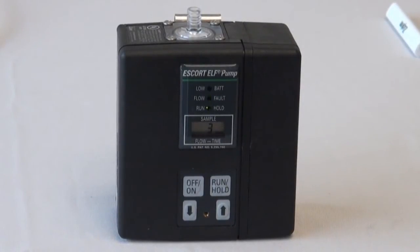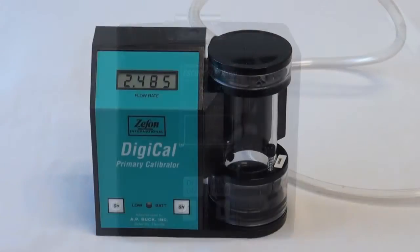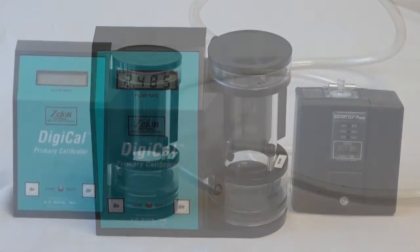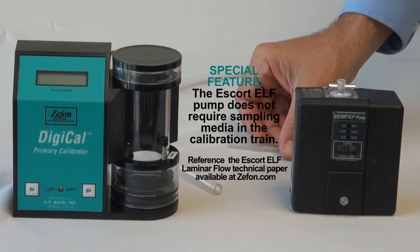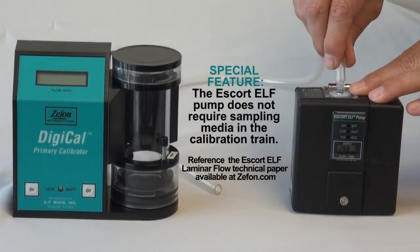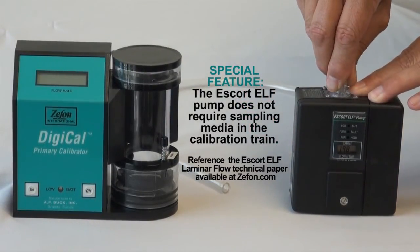Leave the pump at 2.5 liters per minute and turn the pump off. For our demonstration, we will be using the Zefon Digi-Cal 5 as our primary standard calibrator. Connect one end of the tubing to the Escort pump, then connect the other end to the primary calibrator.